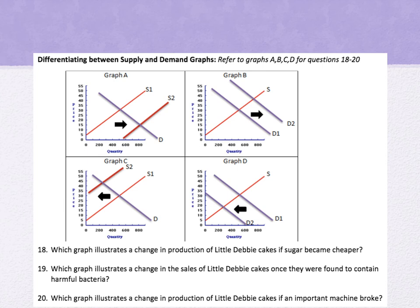Question 19: which graph illustrates a change in sales of Little Debbie cakes once they were found to contain harmful bacteria? Harmful bacteria affects people wanting to buy it — that's consumer taste, a demand determinant — so we choose Graph D because fewer people want to buy the Little Debbies. Question 20: which graph illustrates a change in production of Little Debbie cakes if an important machine broke? A broken machine is technology failure — technology is a supply determinant — so Graph C is the answer because supply decreases.